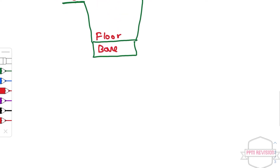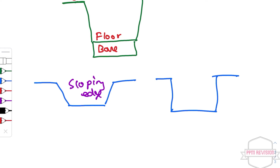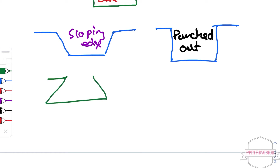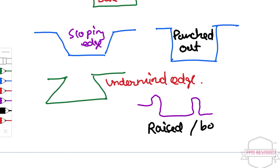Now looking at the categories of edges: the first is sloping edge, which is self-explanatory. Next there is punched out edge. Then there is undermined edge. Next we have raised and beaded edge.